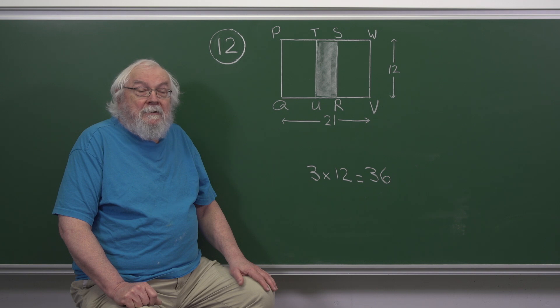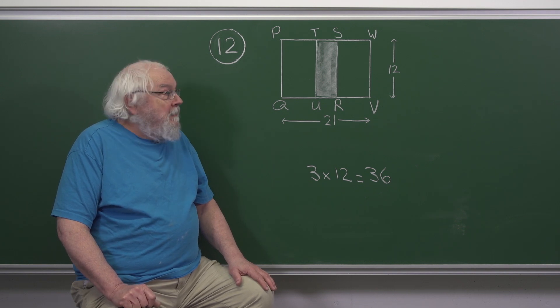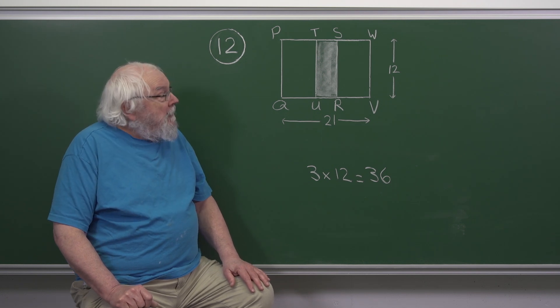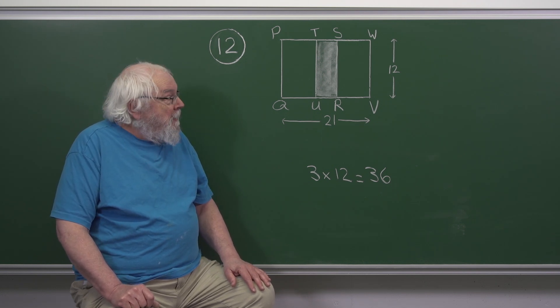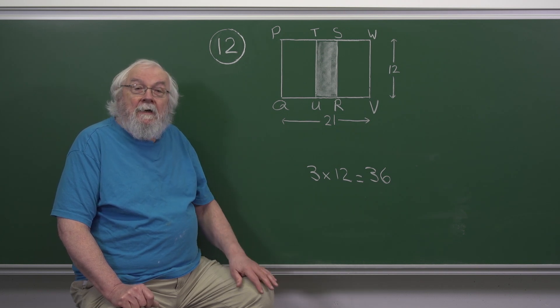This question is about two identical overlapping squares. Dimensions are given in centimeters. Each square is 12 by 12. If they were next to one another, then the width of the whole figure would be 12 plus 12, which is 24.